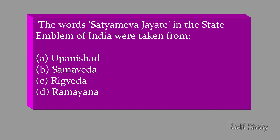The words 'Satyamev Jayate' in the state emblem of India were taken from which source? Options: Upanishad, Samaveda, Rigveda, Ramayana. The options are confusing but if you've studied it, it's not confusing at all. The correct answer is A — Upanishad. Specifically, it is taken from the Mundaka Upanishad. This is actually a CGL question — hard to believe such an easy question appeared in CGL.